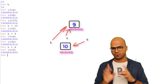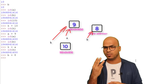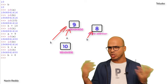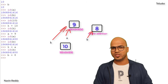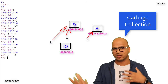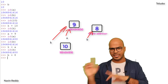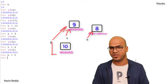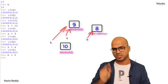Now we have B referring to 10, and A and K referring to 9. What if B also gets a new value, say 8? Now nobody is referring to 10. In Python, we have a concept called garbage collection — when data in memory has no variable tagging it, it will be garbage collected. Until then, it stays in memory.